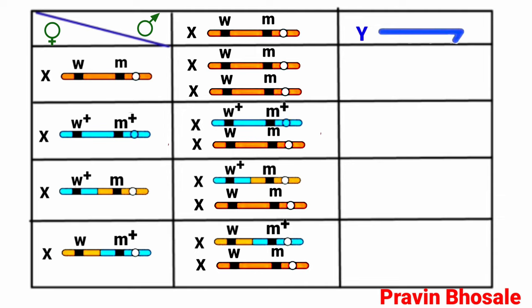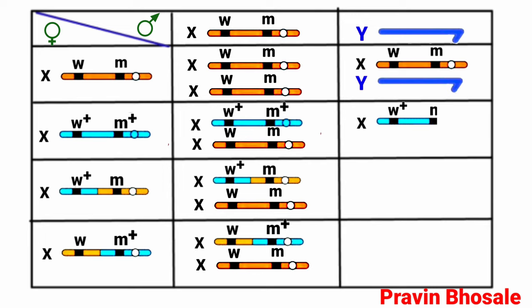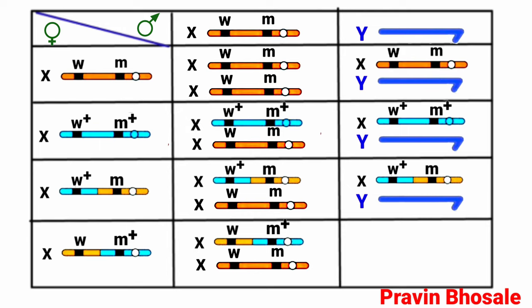Let's see the combinations on the male side. The X chromosome with small w and small m paired with Y chromosome (no genes) gives a male with white eye and miniature wing. The X chromosome with genes w plus and m plus and no genes on Y chromosome gives a male with red color eye and normal wing. The X chromosome with genes w plus and m paired with Y chromosome (no genes) gives a male with red color eye and miniature wing. The X chromosome with w and m plus and Y chromosome (no genes) gives a male with white color eye and normal size wing.